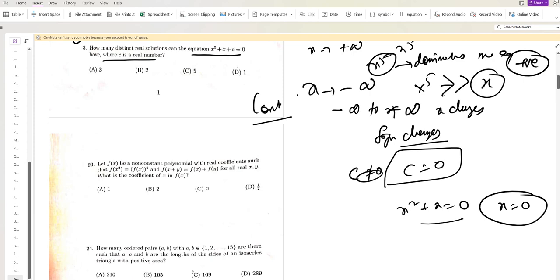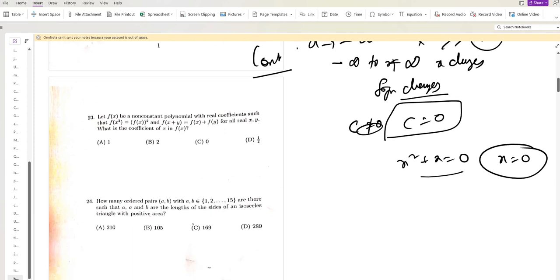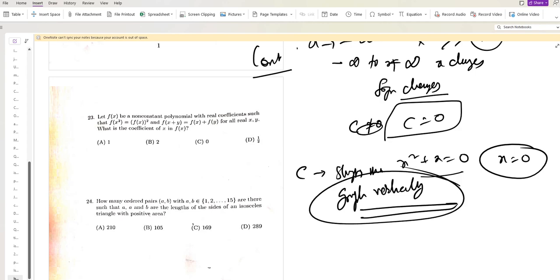Except the constant c shifts the graph vertically up. But it doesn't matter and doesn't affect the number of roots.